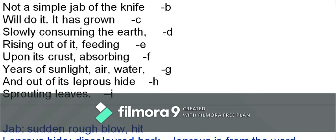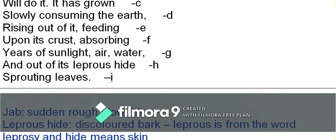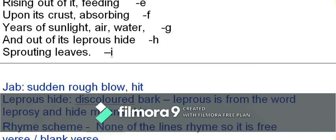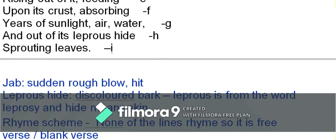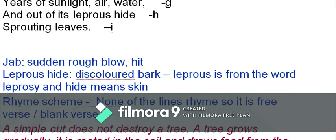'Jab' means to cut with a sudden blow or hit. 'Leprous hide' — 'leprous' comes from the word leprosy, a skin disease; 'hide' means skin. So 'leprous hide' refers to the discolored bark of the tree. It is a metaphor — not a simile — because there is no 'so as' or 'like.' The poem has no rhyme scheme; it is a free verse or blank verse.